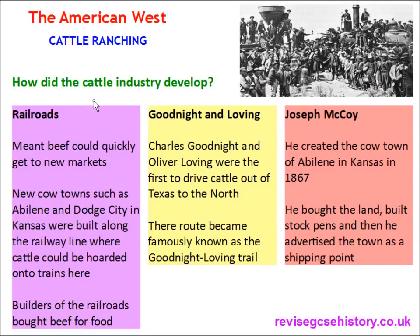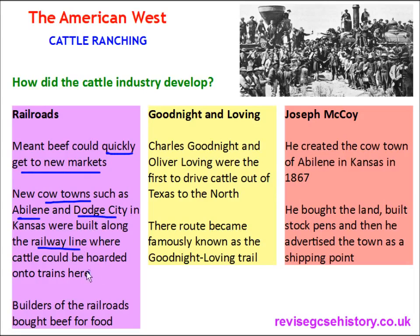Another factor is the railroad. The Transcontinental Railroad was built to go from eastern USA to the West and it meant that beef could quickly get to new markets. New cow towns such as Abilene and Dodge City in Kansas were built along the railway line — these were places where cattle could be loaded onto trains and taken to markets. Additionally, the builders of the railroads bought beef for food, which increased demand and popularity.